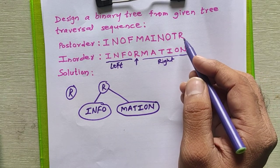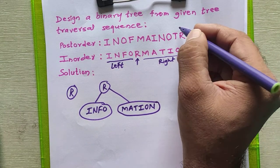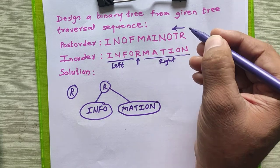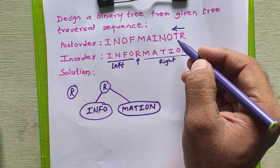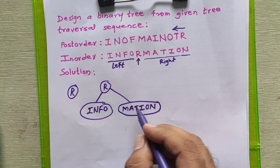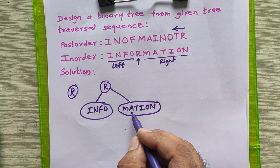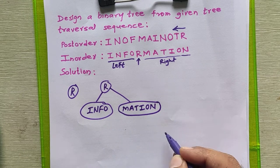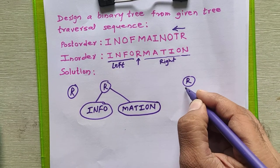Now we repeatedly follow the same steps. We go back to the post-order sequence to get the next root. In post-order sequence, to get the next root we go from right to left, so the next root is T. If you see in this diagram, T is here. So if I make T as the root node, then MA will go to the left hand side and ION will go to the right hand side.